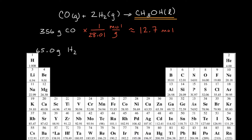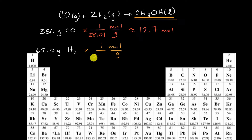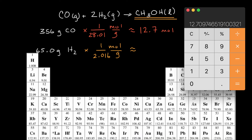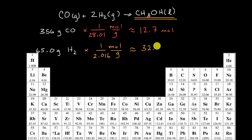We can do the same thing for molecular hydrogen. Each hydrogen atom is 1.008 grams per mole, but each molecule has two hydrogens, so the molar mass is 2.016 grams per mole. So 65.0 divided by 2.016 gives us approximately 32.2 moles of molecular hydrogen.